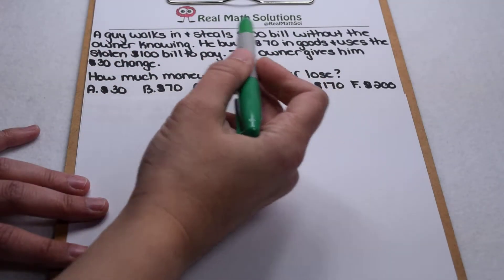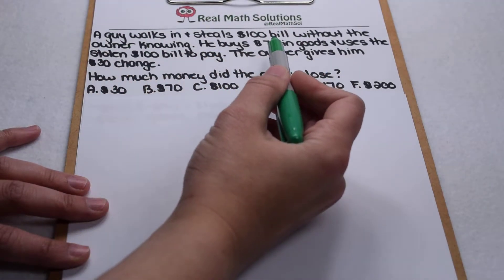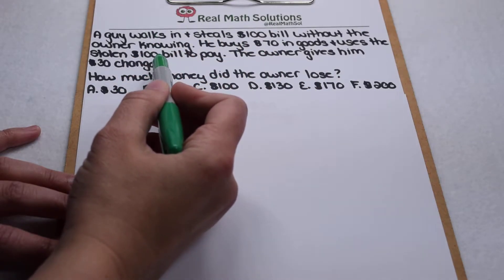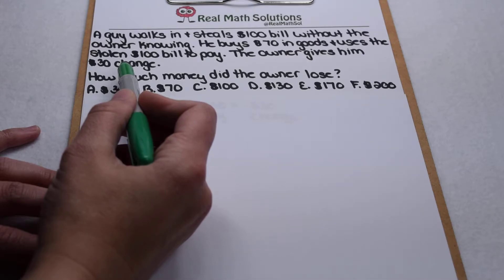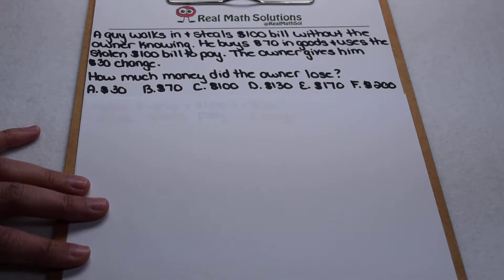A guy walks in and steals a $100 bill without the owner knowing. He buys $70 in goods and uses the stolen $100 bill to pay. The owner then gives him $30 in change. So how much money did the owner lose?